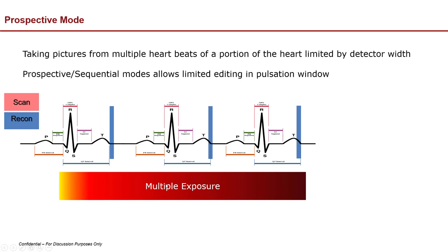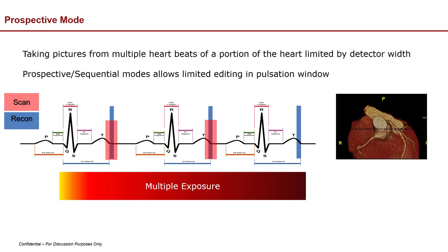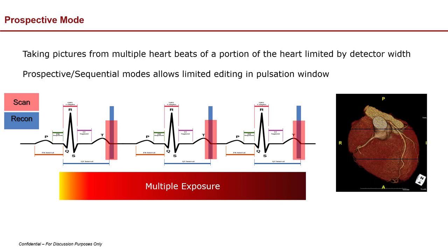The problem with most CT scanners is you can't cover the entire heart in one rotation — you take a set of pictures corresponding to the detector coverage. A 64 or 128-slice scanner will have about a 4-centimeter detector, so you get 4 centimeters at a time. Each time the table moves and takes another picture, you get another 4 centimeters. If your heart isn't exactly the same size and shape, you'll get an artifact and it won't line up.